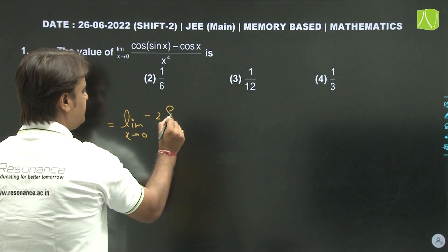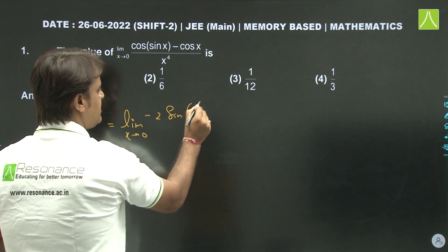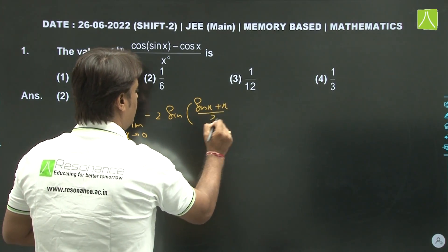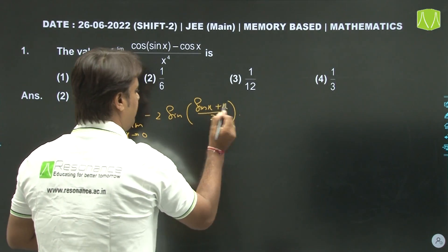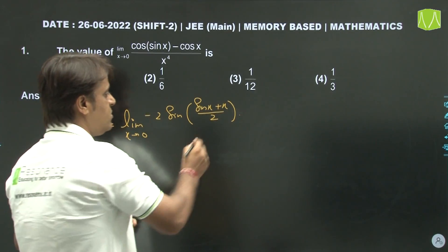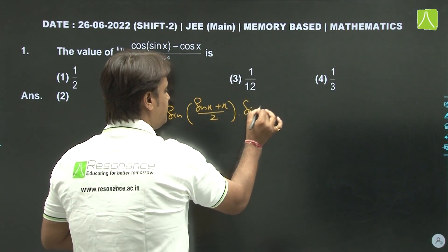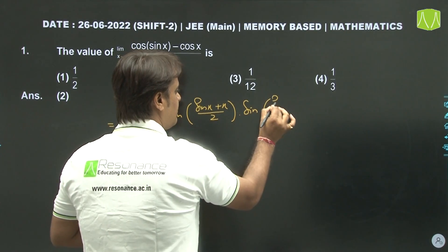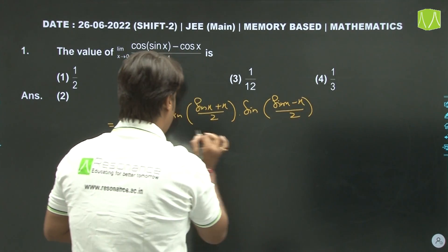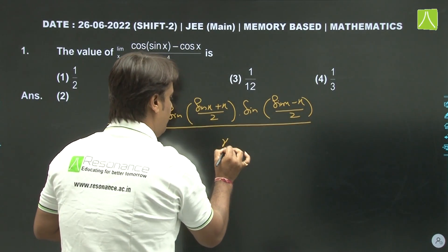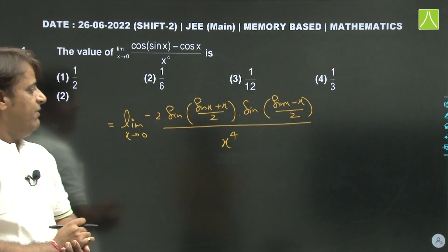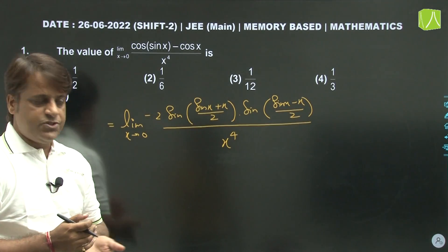So applying the formula: minus 2 sin((sinx + x)/2) sin((sinx - x)/2) upon x to the power 4. Now we will apply the standard limit sin(θ)/θ → 1 as θ → 0.